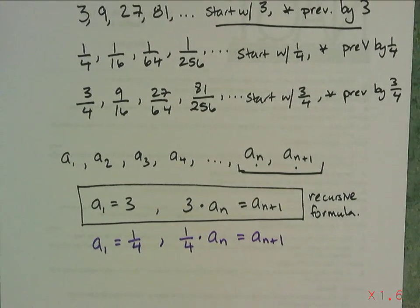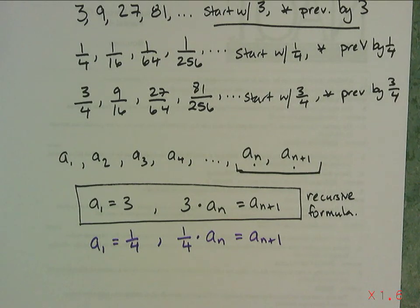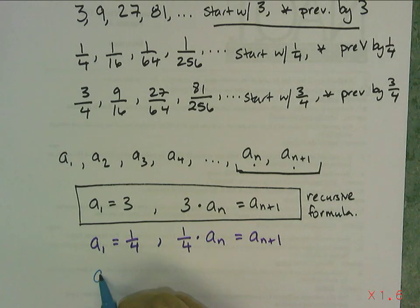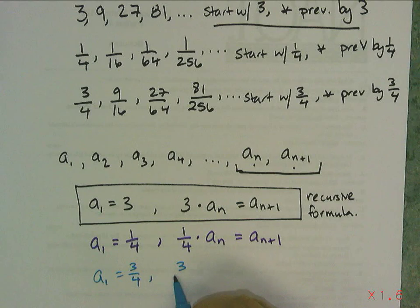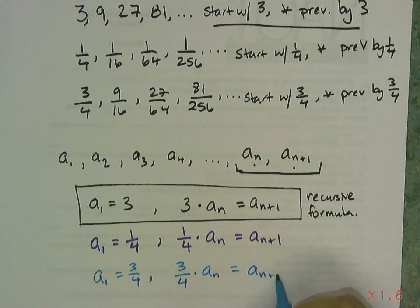And I can do the same thing with the start with 3/4, multiply previous by 3/4. So I say a₁ = 3/4. And then what do I do to find the next term? I multiply it by 3/4. aₙ equals aₙ₊₁.